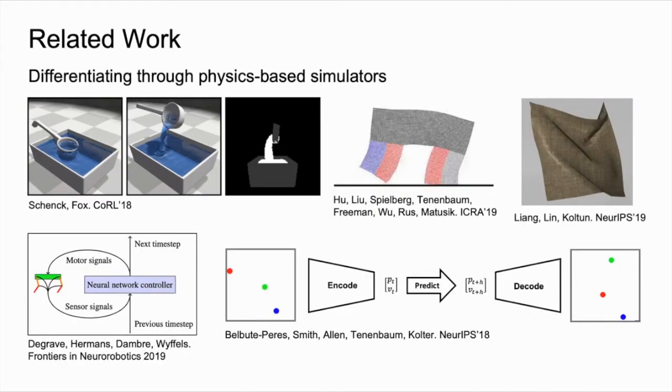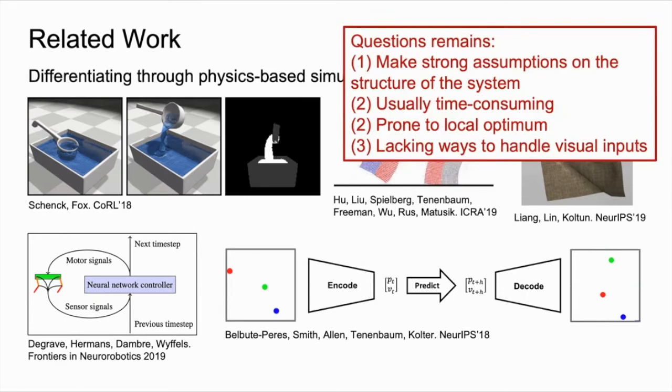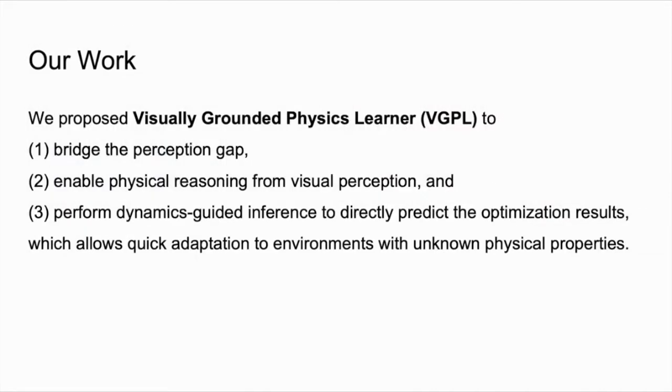Other people have tried differentiating through physics-based simulators to extract gradients, which showed strong results in solving inverse problems of various physical environments. However, they usually make strong assumptions on the structure of the system and their optimization process for dealing with the inverse problems is usually both time-consuming and prone to local optima. Also, most of them directly operate on the state information of the dynamical system, lacking a way of handling raw visual inputs. Our work aims to bridge the perception gap, enable physical reasoning from visual perception, and perform dynamics-guided inference to directly predict the optimization results, which will allow us to quickly adapt to environments of unknown physical properties.